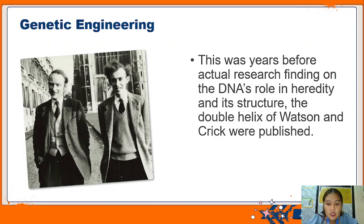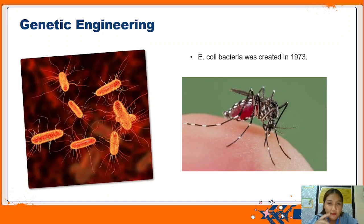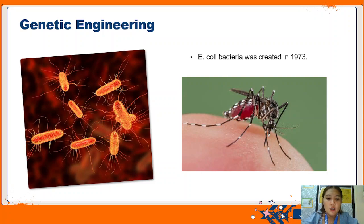Watson and Crick showed that DNA could be the medium of transmission of genetic information, years before the actual research findings on DNA's role in heredity and its structure were published. Genetic engineering was also used when E. coli bacteria was created in 1973. Up to date, there are ongoing researches on GMOs, such as the use of modified male mosquitoes as pest control over female mosquitoes, since female mosquitoes are the carriers of the Zika virus.